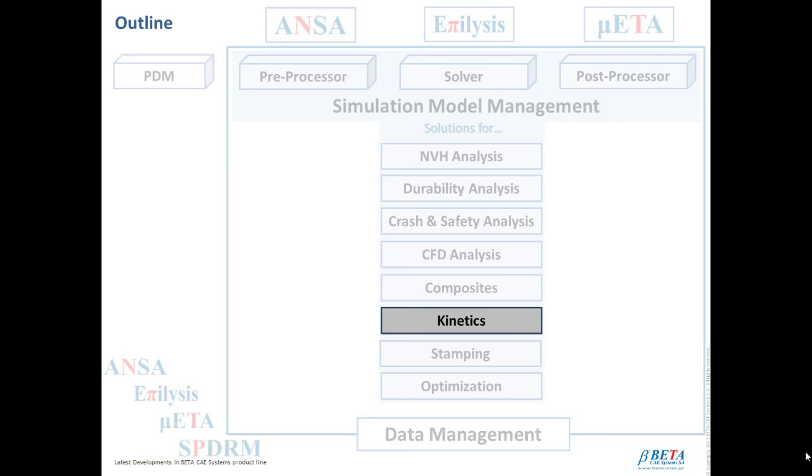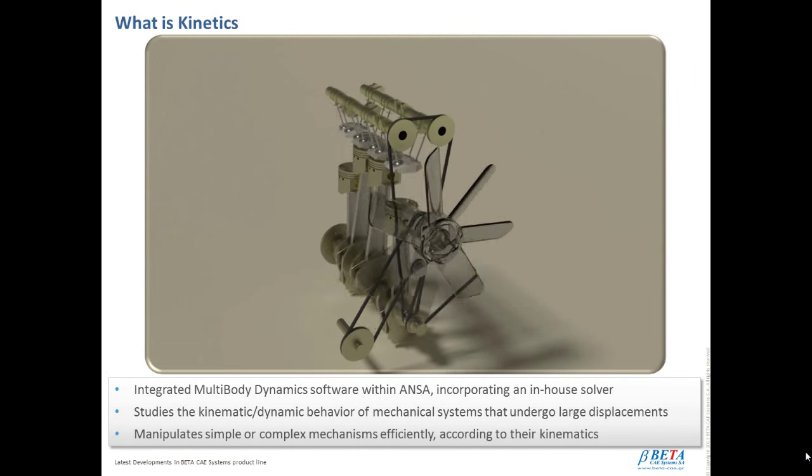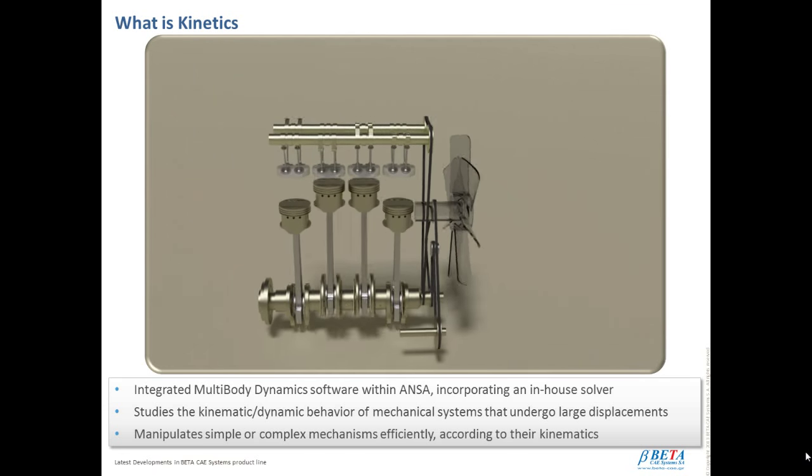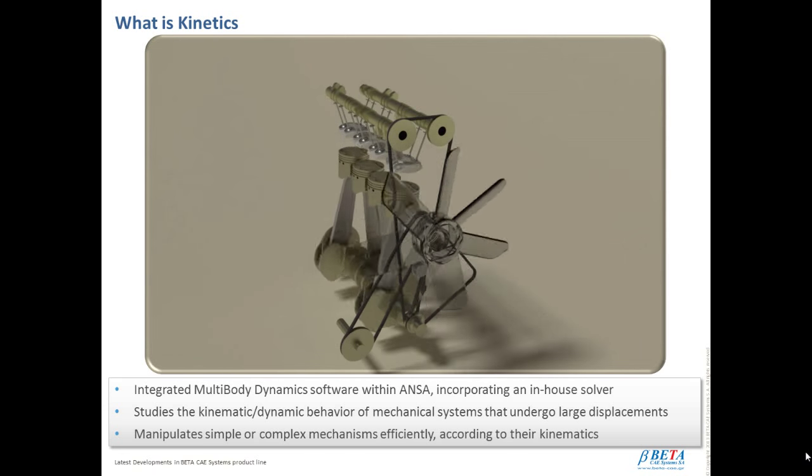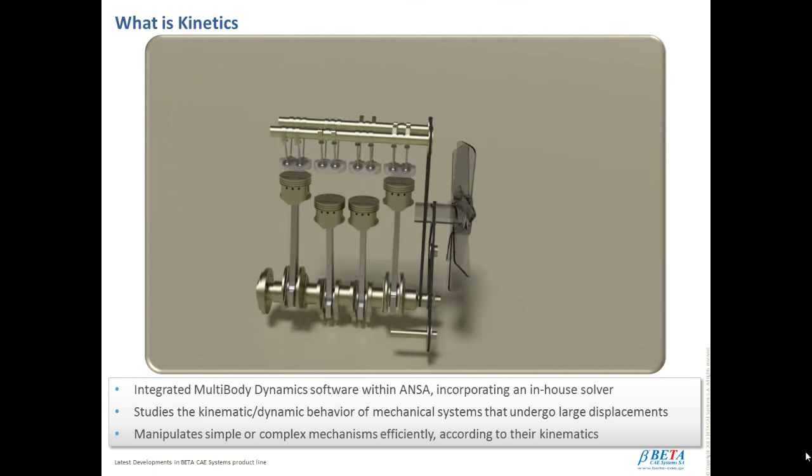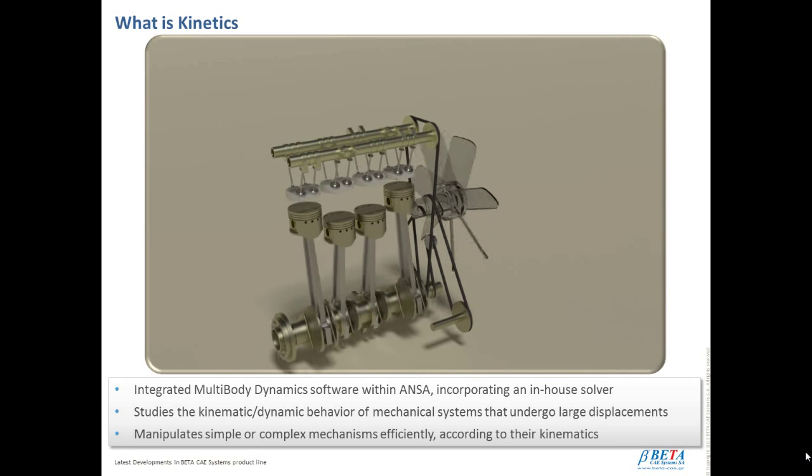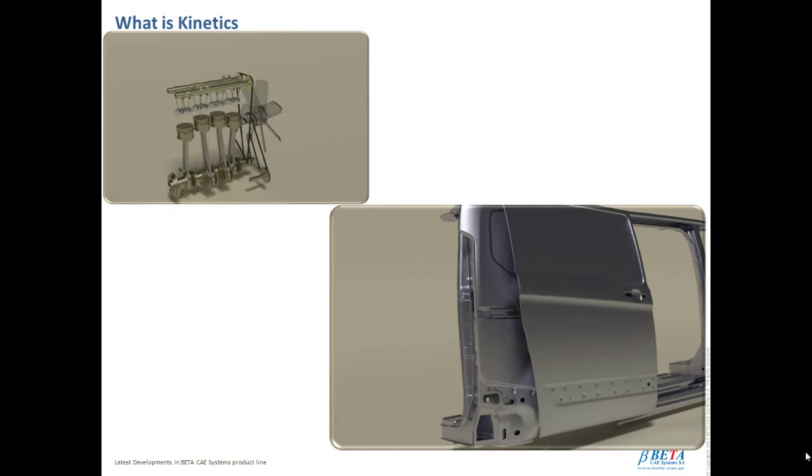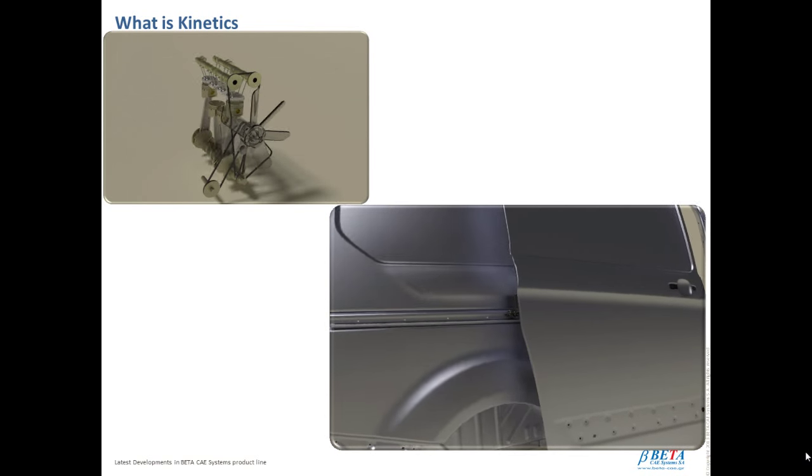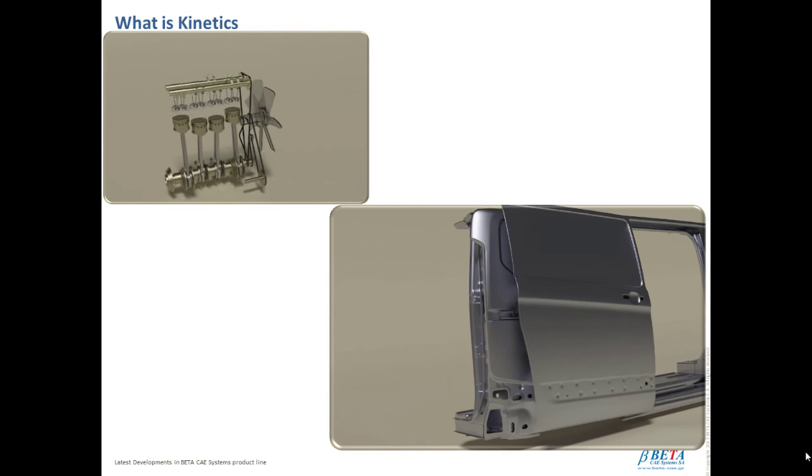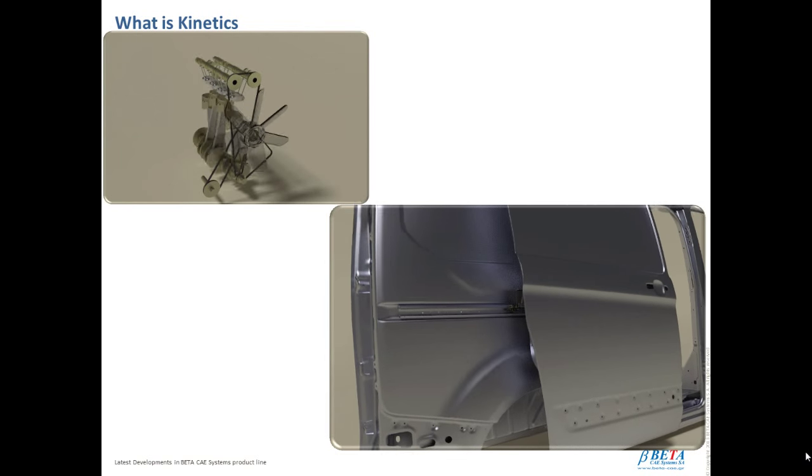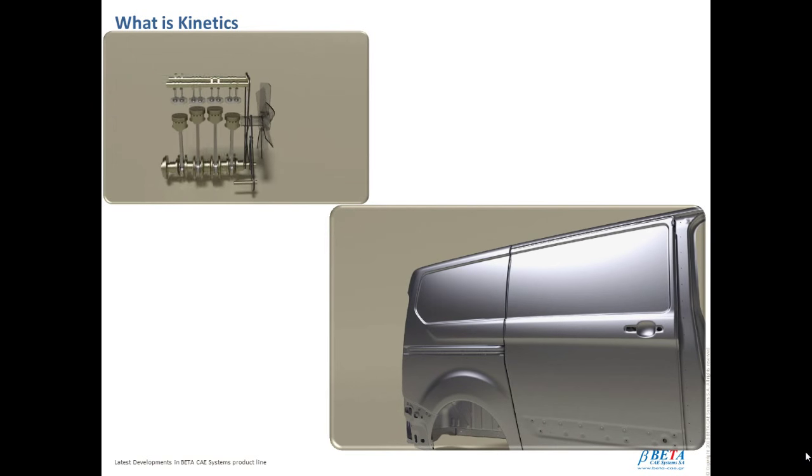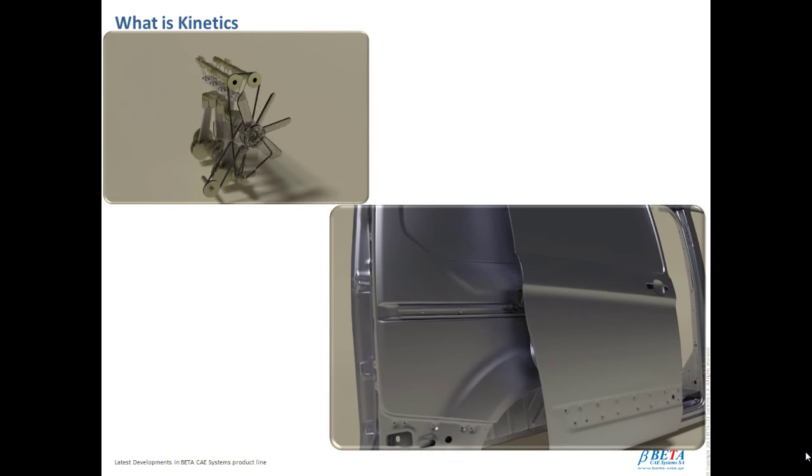During the product manufacturing process, an overview of the design prototype's motion behavior is really essential for engineers in order to understand and perceive how moving bodies interact with each other. For this reason, we have introduced the Kinetics Module in ANZA, which can be considered as an integrated multi-body dynamic software incorporating an in-house solver. Among other features, it studies the kinematic dynamic behavior of mechanical systems that undergo large displacements. Furthermore, it manipulates simple or complex mechanisms efficiently according to their kinematics. And speaking of large displacements, kinetics can be used as well in sequential couple simulations that involve motion. In cases like a typical sliding door slam test, the displacements of the bodies are too large, and therefore the solution using an FE solver requires high computation times and high solver resources. Another interesting feature illustrated on the specific video is the animated camera. It lets the user play and view animations from a shifting observation viewpoint that changes while the animation progresses.